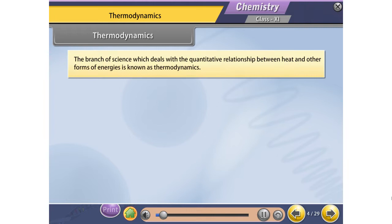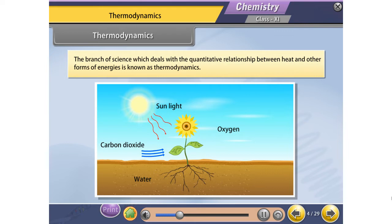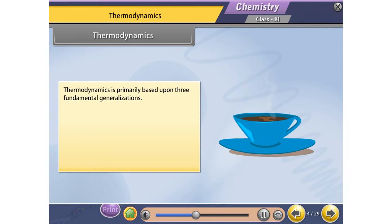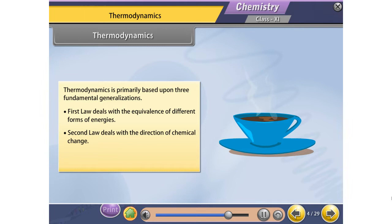The branch of science which deals with the quantitative relationship between heat and other forms of energies is known as thermodynamics. Thermodynamics is primarily based upon three fundamental generalizations. The first law deals with the equivalence of different forms of energies. The second law deals with the direction of chemical change. The third law helps to evaluate thermodynamic parameters like entropy.